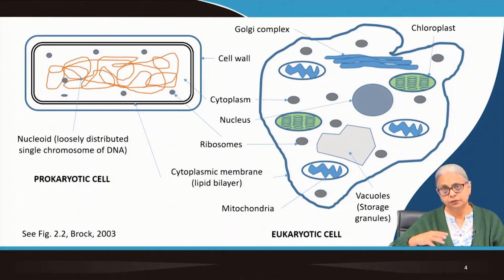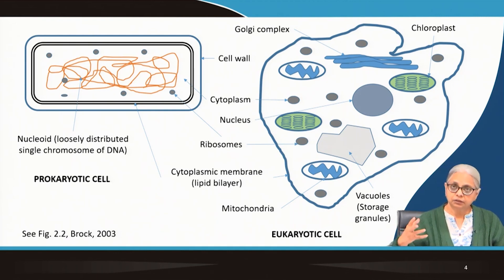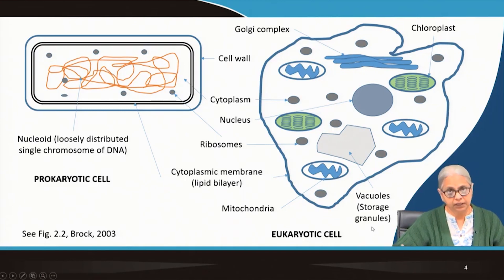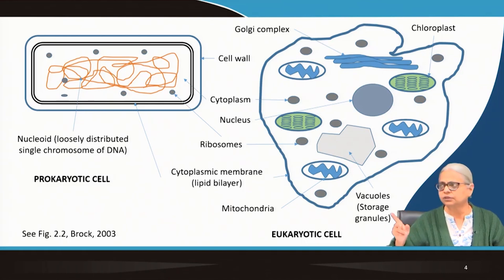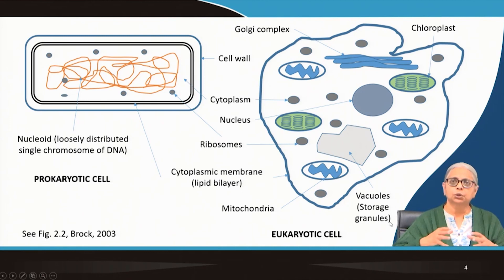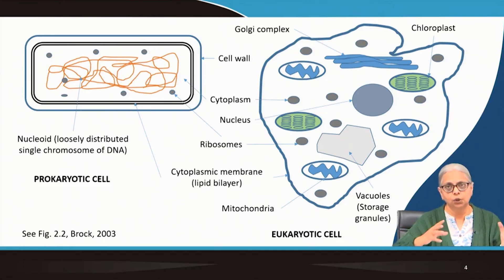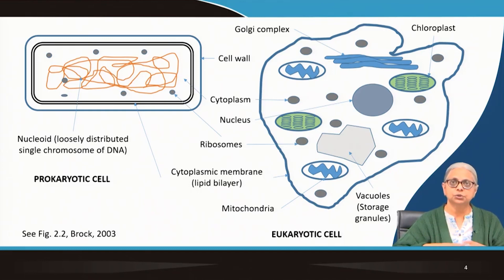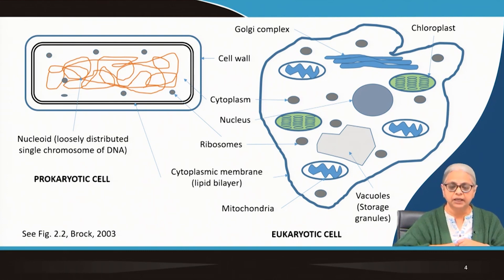Eukaryotic cells have another interesting feature: vacuoles or storage granules. When environmental conditions change, there can be feast or famine. When there is an enormous amount of food in the environment, especially microbial organisms — and even bacteria have this same ability — they can store whatever is required. When the environment becomes less favorable or hostile and food is depleted, they use whatever is stored within their bodies and can survive even under those hostile conditions.